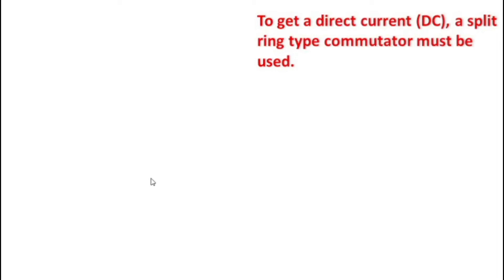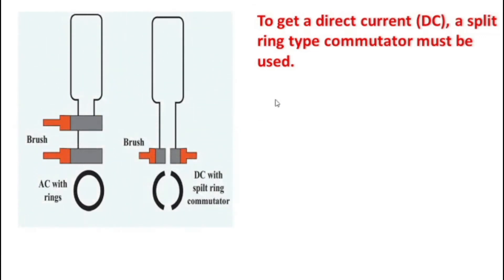What is DC? DC is direct current. What is AC? AC is alternating current. Alternating current means the direction of the current in a resistor or any other element changes its direction alternatively — this current is called AC current. To get direct current DC, a split ring type commutator must be used. An AC generator uses slip rings, while a DC generator uses a split-type commutator.